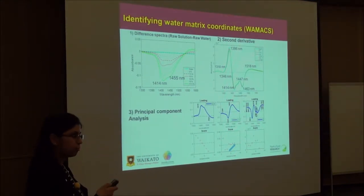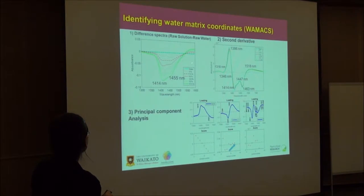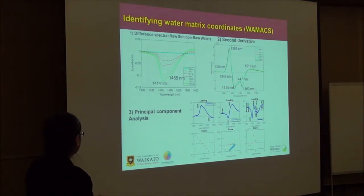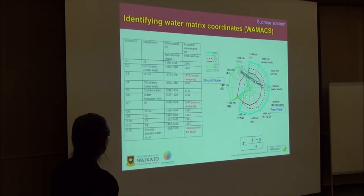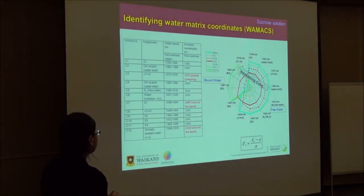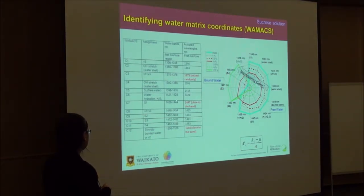This is the method of how to identify water matrix coordinates. Thanks to the aquaphotomics team and society for helping me figure out how to identify water matrix coordinates — this is a map of how to find the water peaks. You can subtract the water, apply second derivative, and principal component analysis. After finding out the water matrix coordinates, we should make the aquagram. These are the water matrix coordinates in the first overtone region of water, and some water bands were close to already assigned coordinates, for example 1447 rather than 1444.